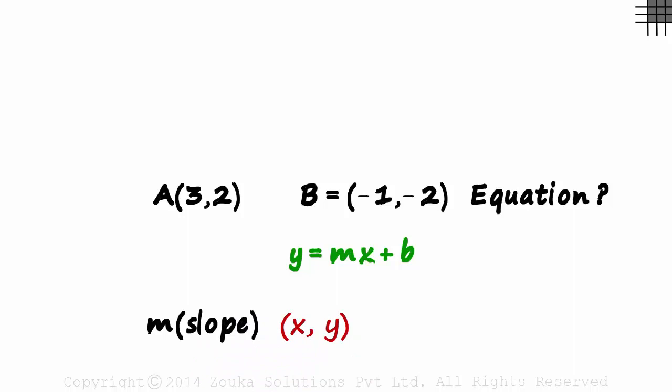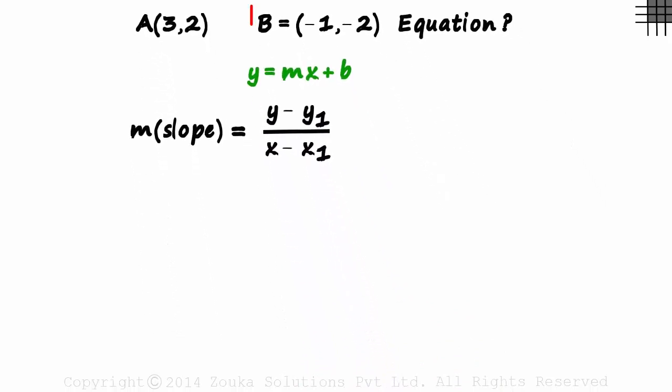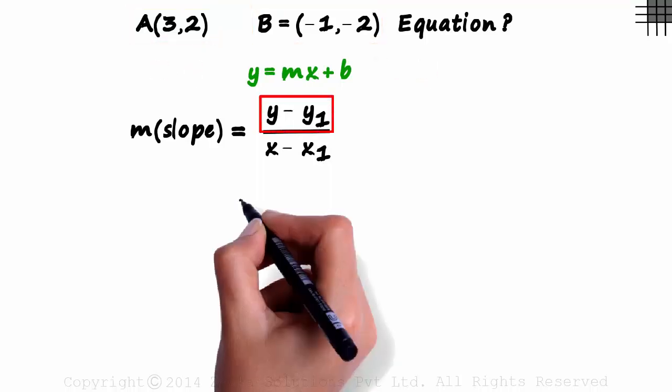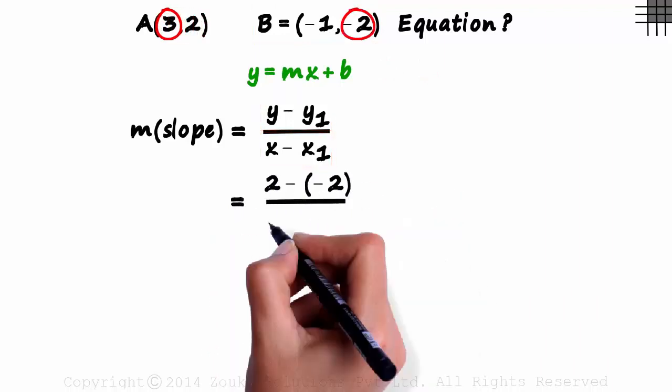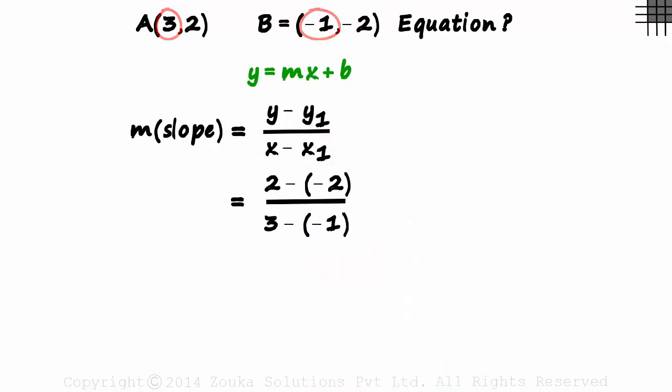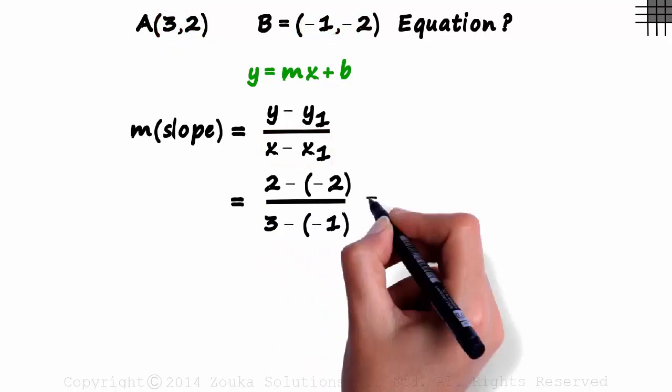If X comma Y and X1 comma Y1 are the coordinates of the two points, then the slope will equal Y minus Y1 over X minus X1. We have the coordinates of the two points here. If we assume A to be X comma Y and B to be X1 comma Y1, then the numerator would be two minus minus two and the denominator three minus minus one. This gives us the slope of the line as one.